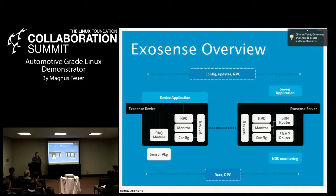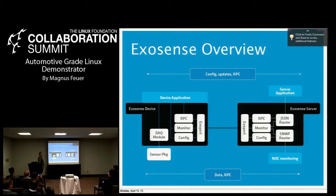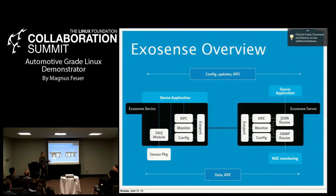Looking at the system overview — this is a bit outdated and terminology has changed. On your right side you have the Exosense server and your server application, usually a web server, that communicates to the JSON router internally through JSON-RPC. The JSON-RPC can then forward RPC commands to the Exosense device, which forwards it to the device application. It's full store-and-forward on the server side, so if the device is not available right now, it holds the message until it becomes available. We can also monitor data through probes, and we have full configuration management so you can configure and manage a couple of million devices without major issues.